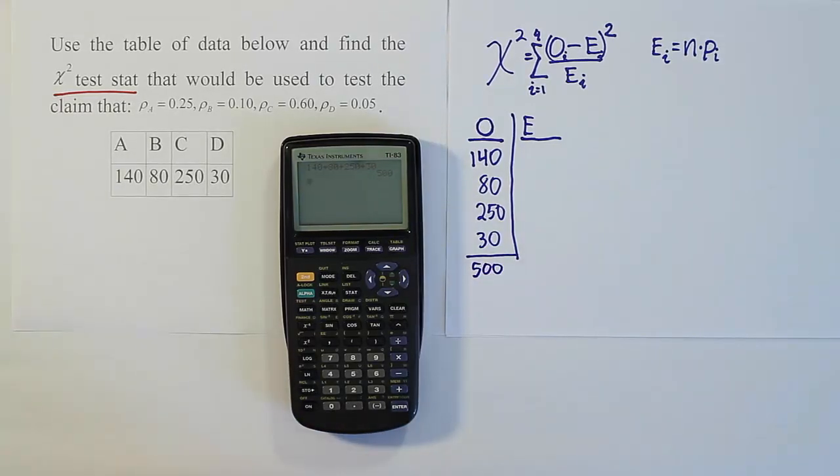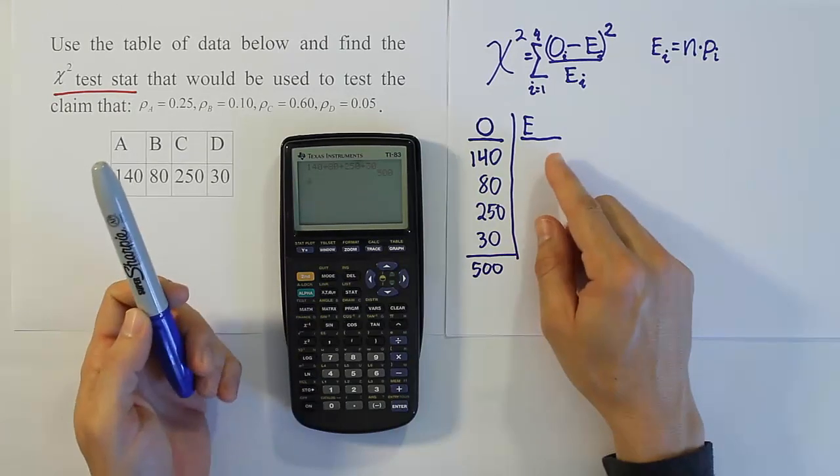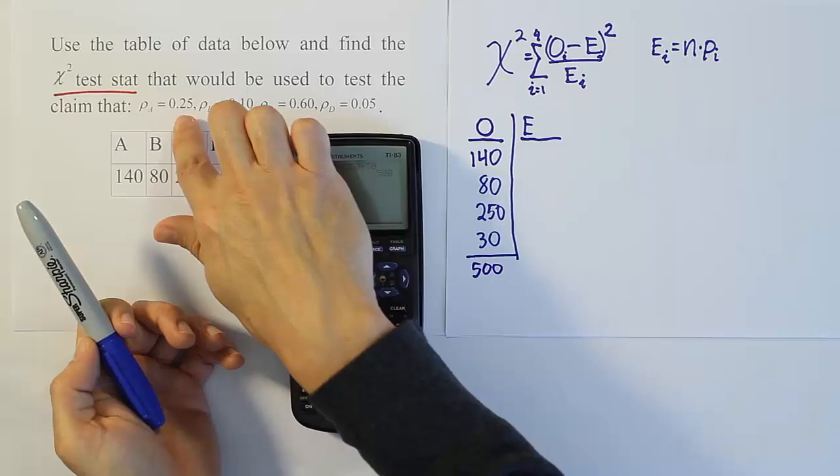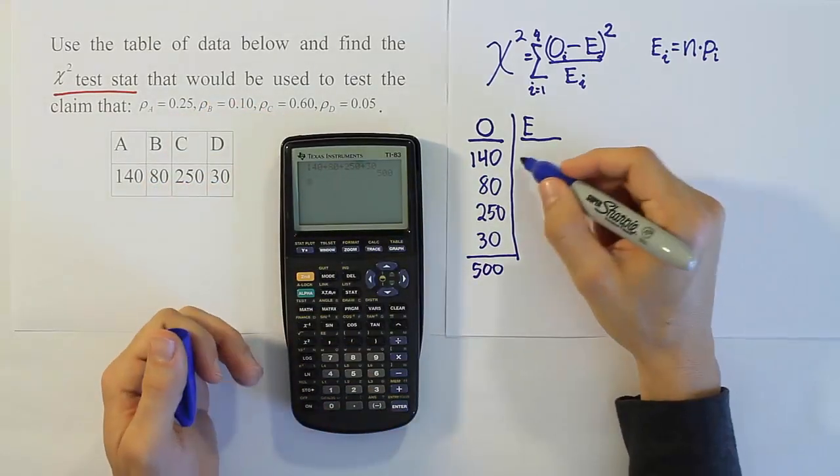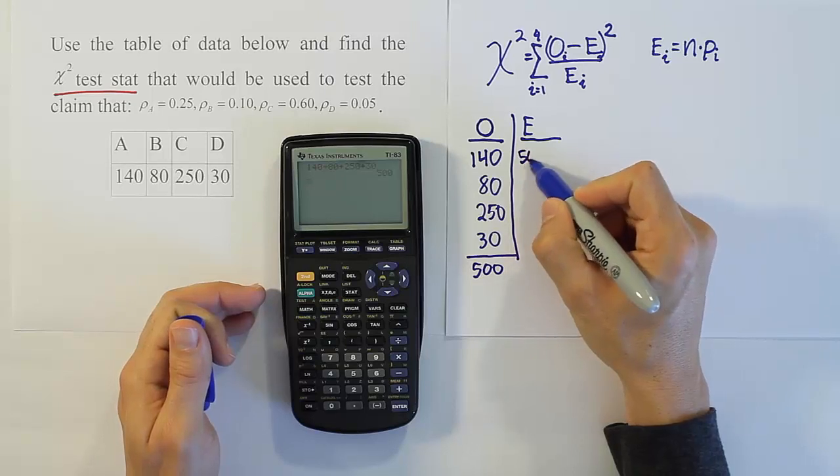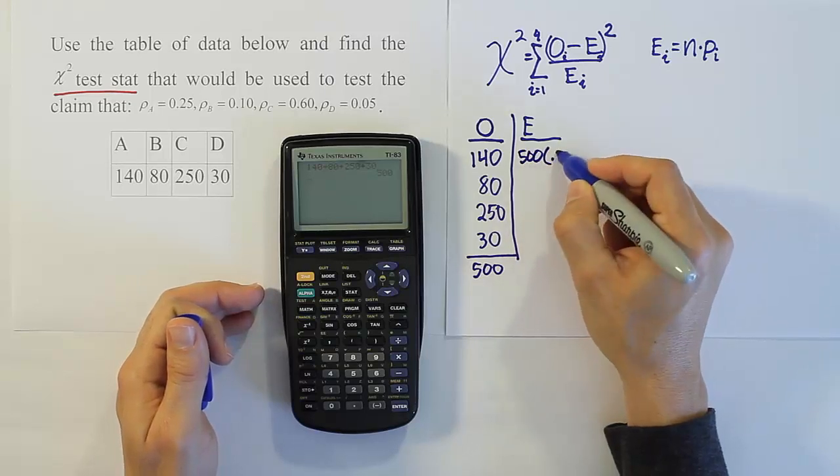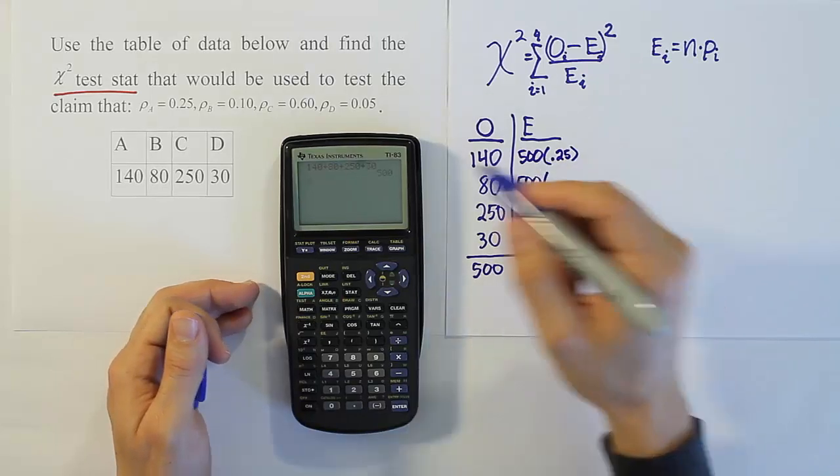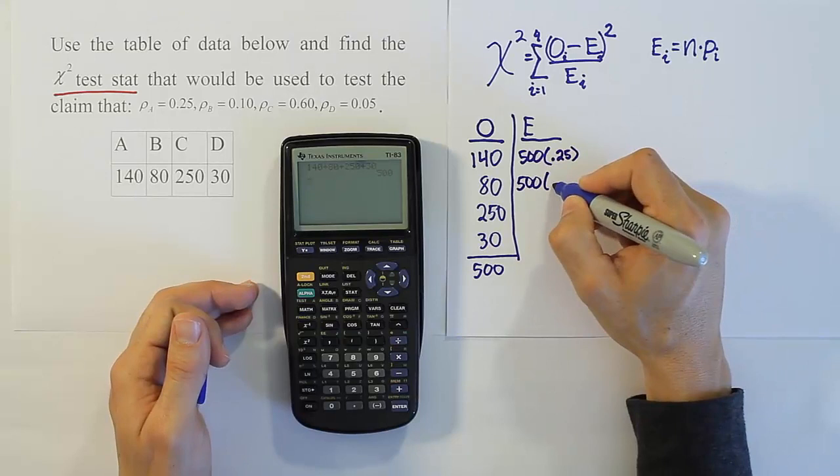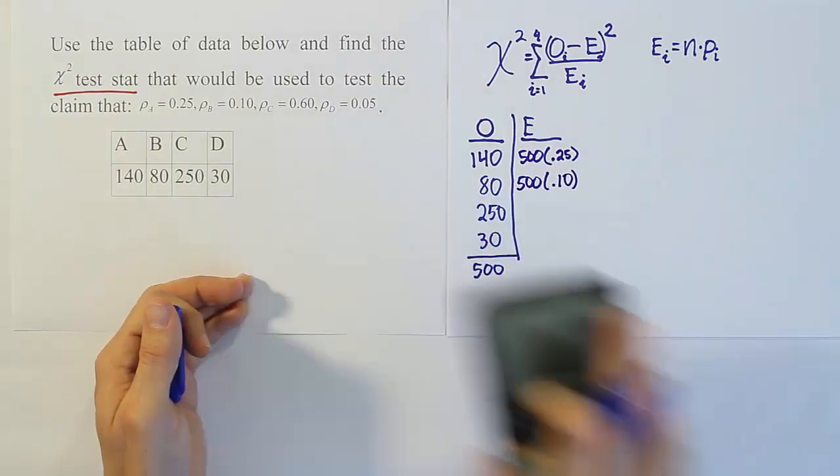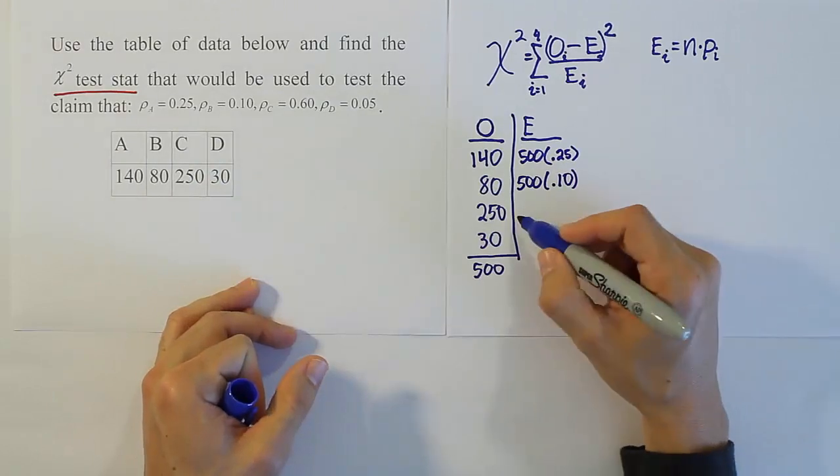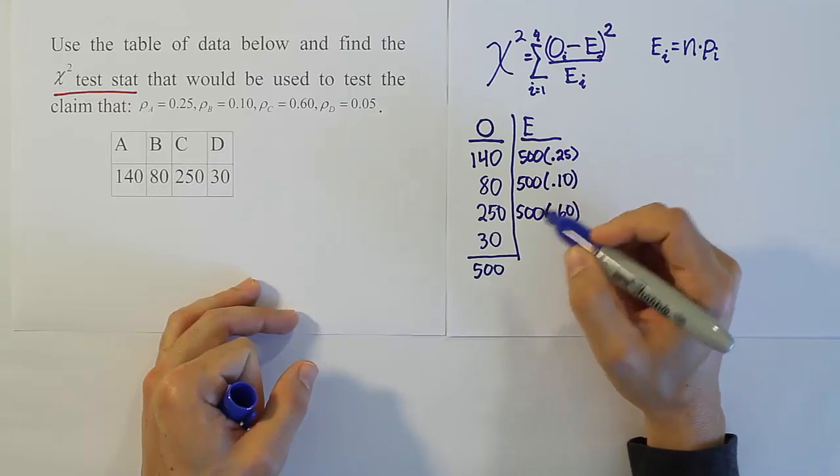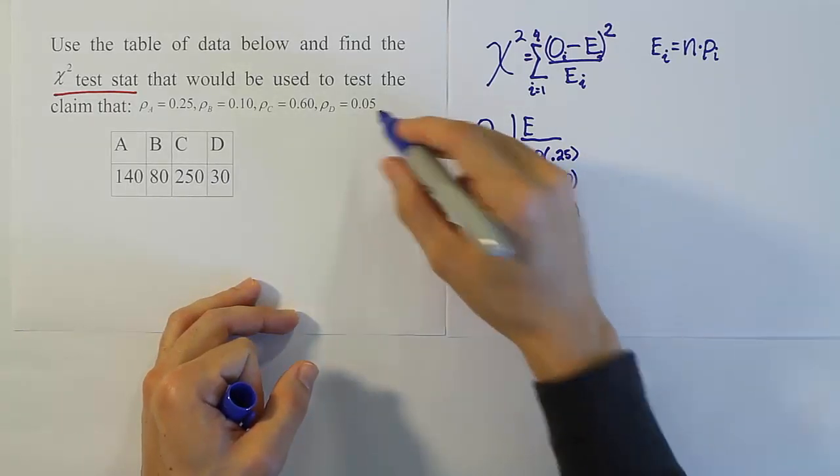Okay, so now we have that as our n. Now we can finish the rest of the problem by simply doing the n times p_i. So it would be 500 times 25% for A. So 500 times 0.25. Okay, then we'll have for the next one, 500 times 0.10. Alright, that's for category B. And then we'll have for category C, 500 times 0.60. And then lastly, 500 times 0.05.